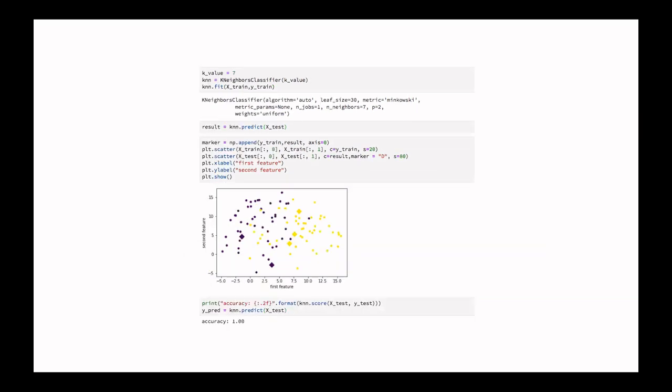Changing K to seven and rerunning the fitting, prediction, and plotting gives 100% accuracy on the test data.